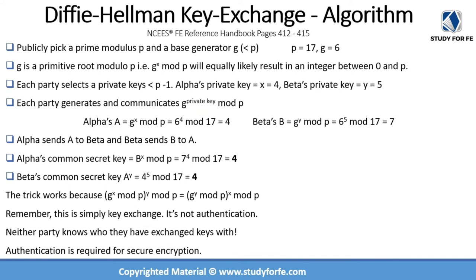The one-way function means that without knowing x and y, you won't be able to arrive at the common secret. The publicly traded values were 4 and 7, but how you arrive at 4 and 7 is not made public, and without knowing that you won't really be able to decode it.